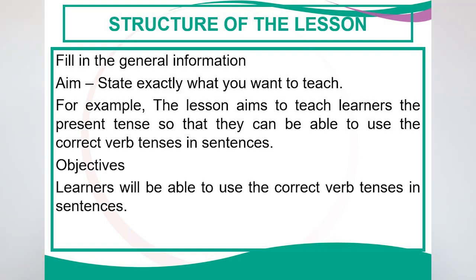In the first structure you have the aim — what is the aim of the lesson? You need to state exactly what you want to teach. For example, if you want to teach the present tense, write: the lesson aims to teach learners the present tense so that they can use the correct verb tenses in sentences. Simply writing 'the aim is to teach past tense' is too vague.